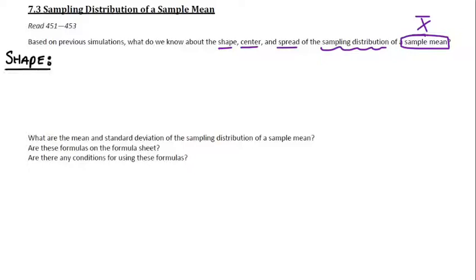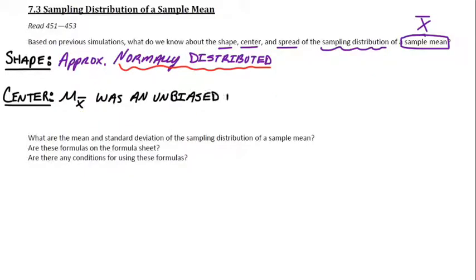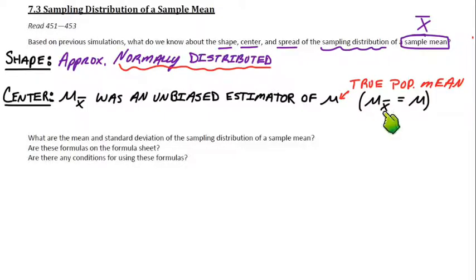Let's start with the shape. For x-bars, we know the shape of the distribution can be approximately normally distributed, and there may or may not be some conditions that go along with that — we'll get to that in just a moment. For the center, just like for sample proportions, the mean of our x-bars, the mean of our sampling distribution, is centered exactly where we want it. The mean, mu sub x-bar, is an unbiased estimator of mu, the true population mean. That means the mean of the distribution is centered exactly at mu.